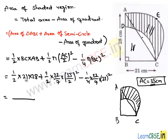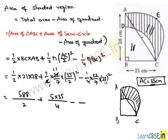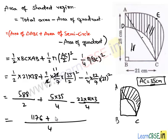Simplifying: (21 × 28)/2 = 294. For the semicircle: (1/2) × (22/7) × (35/2)², where 7 cancels into 35 giving 5, and 2 cancels into 22 giving 11, yielding 11 × 5 × 35/4 = 1925/4. For the quadrant: (1/4) × (22/7) × 21², giving 22 × 3 × 21/4 = 1386/4. The area of the shaded region is 1715/4 square cm.